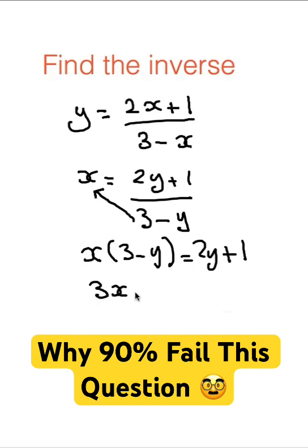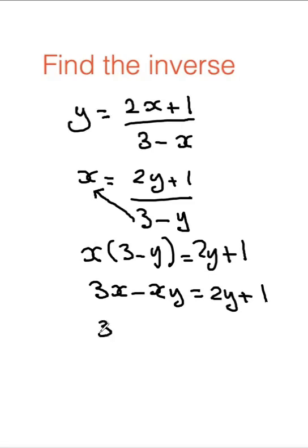Here, so we're going to get 3x minus xy equals 2y plus 1. So 3x minus 1 equals 2y plus xy.